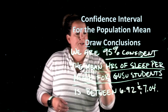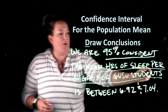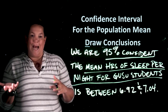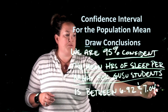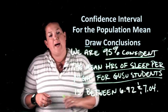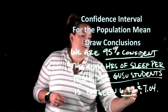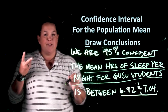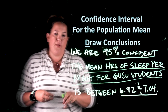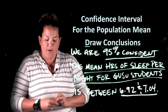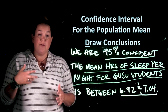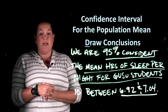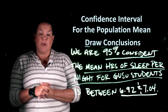...is between 6.92 and 7.04. Because I already stated the units when I defined the parameter, I don't have to repeat them here, but if units weren't included in the parameter definition, you'd add them at the end. To summarize: the three things for interpretation are how confident you are, the parameter, and the interval itself. In future videos we'll work through another example and I'll show you how to calculate these using the programming package R.